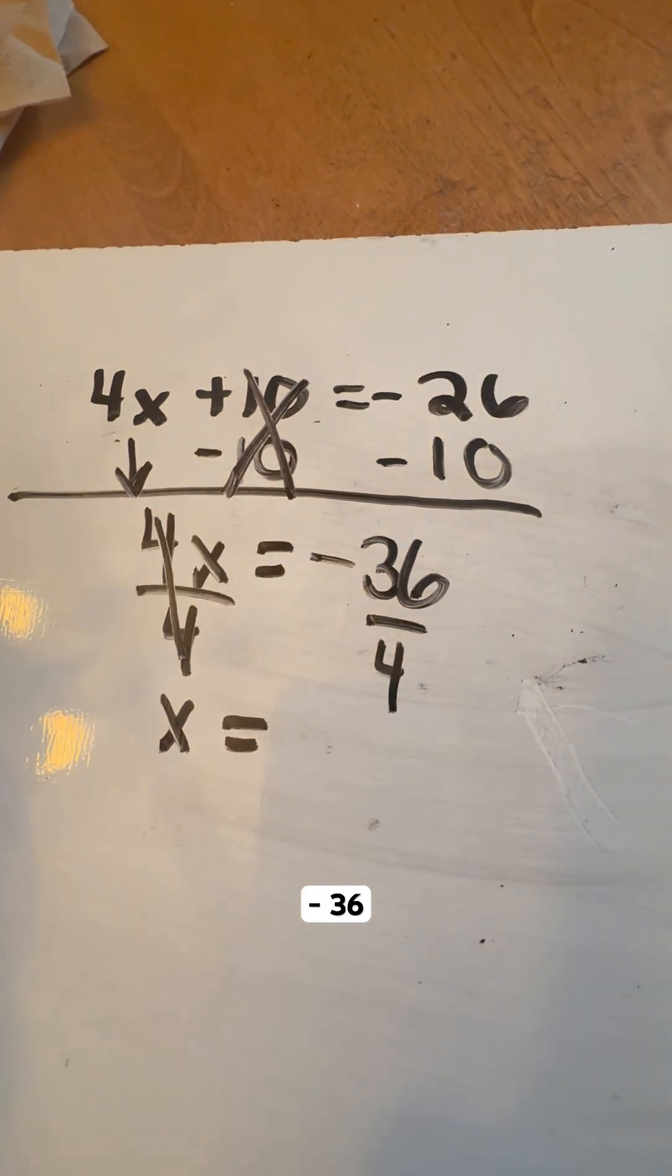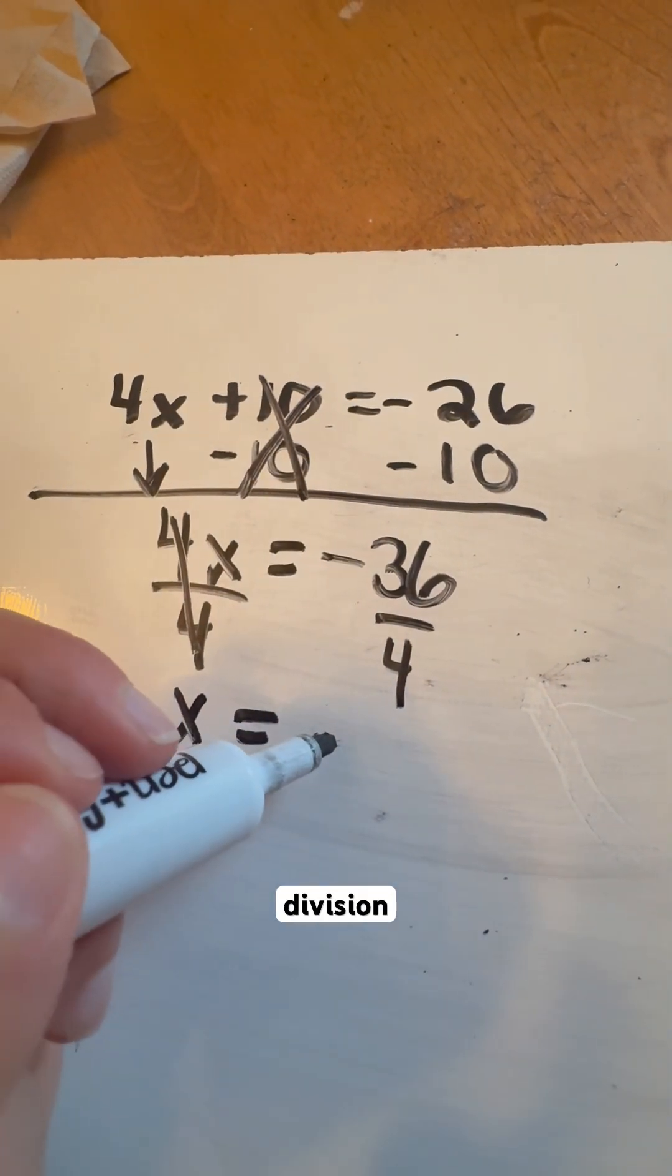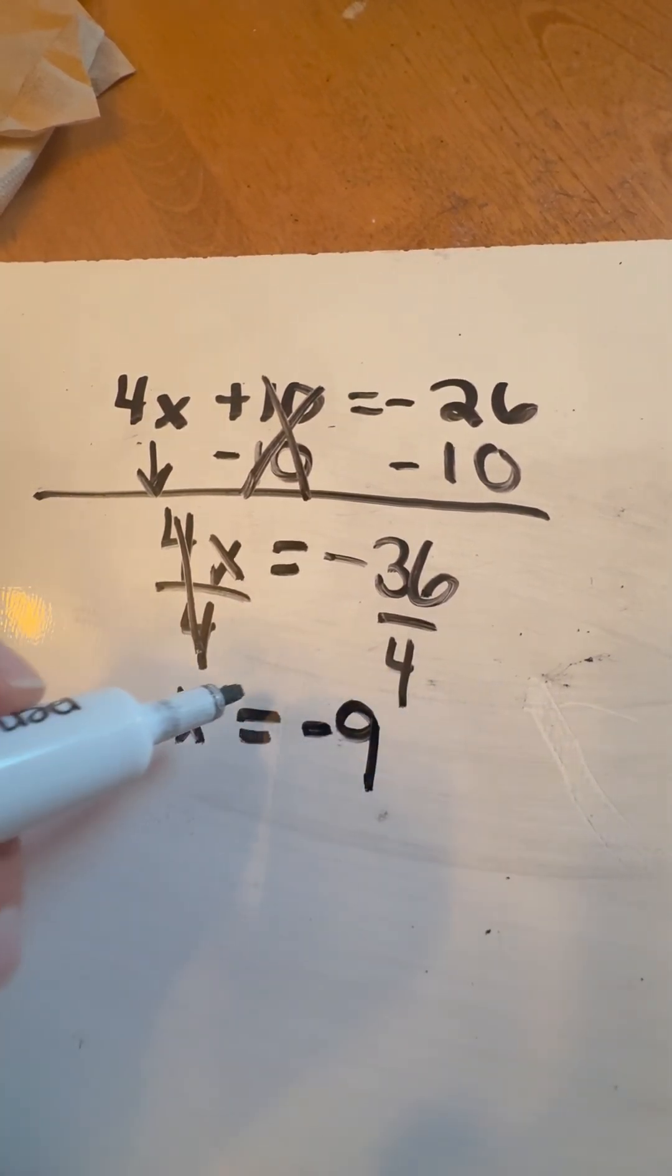And then we're going to do negative 36 divided by a positive 4, which are rules of division of a positive and a negative means that this is going to be a negative number. And that's going to be a negative 9.